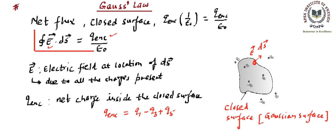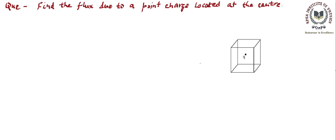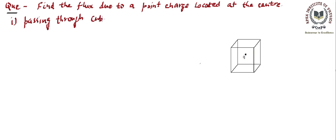We will see the uses of Gauss's Law in the next part. As an example of flux calculations, there is a question: find the flux due to a point charge located at the center of a cube. The first part asks for the flux passing through the entire cube.